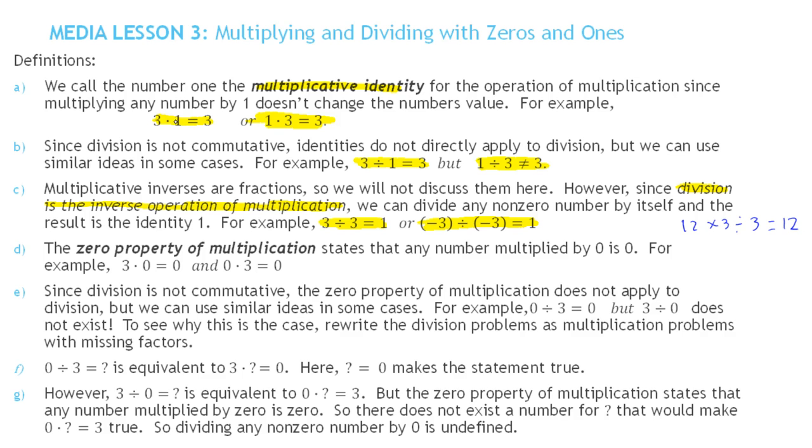Another property that's useful is the zero property of multiplication. It says if you multiply any number by 0, the result is 0. So 3 times 0 is 0, 0 times 3 is 0. Again, the order doesn't matter. Division is not commutative, so it's not going to directly apply. But we do know that 0 divided by 3 is 0. How many groups of 3 are in 0? There are 0. But here, this says how many groups of 0 are in 3, and the answer does not exist.